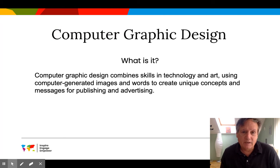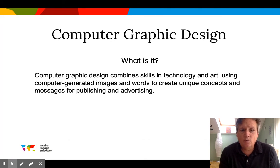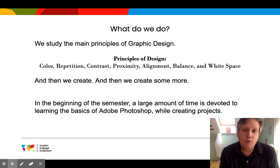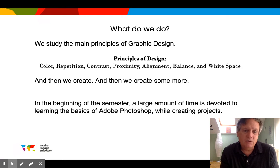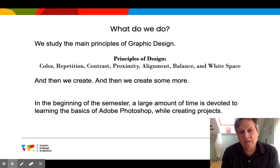Computer Graphic Design — what do we do in this class? We combine the skills of technology and art. We use computer-generated images and words to create different messages for publishing and advertising. We study the main principles of graphic design: color, repetition, contrast, proximity, alignment, balance, and white space. When we look at projects, these are the things we focus on as a class.